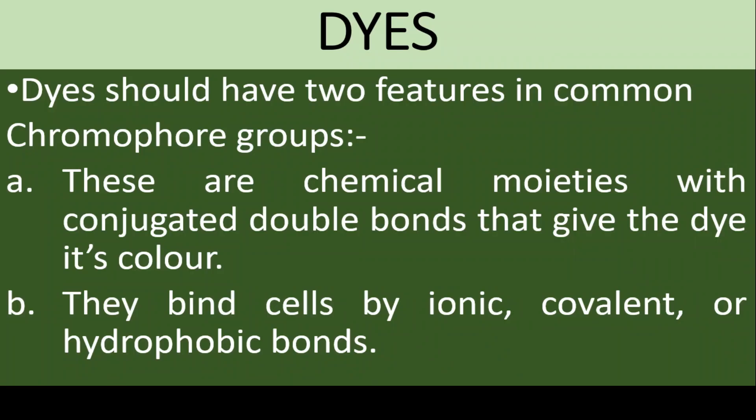We need dyes to observe microorganisms and other cell bodies using microscopes. Dyes have two features in common: first, they have chromophore groups, which are chemical moieties with conjugated double bonds that give the dye its color. Second, they bind to cells by ionic, covalent, or hydrophobic bonds.